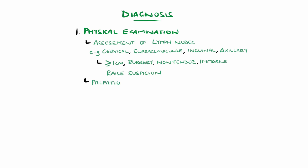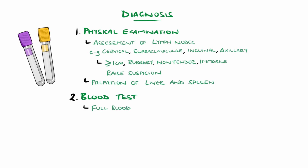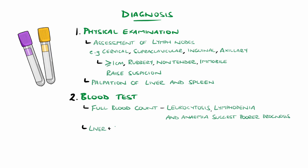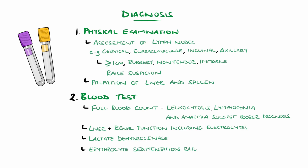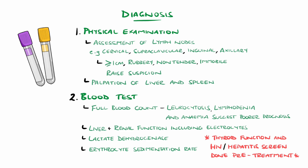There should also be palpation of the liver and spleen looking for enlargement. Blood tests include a full blood count — a marked leukocytosis, lymphopenia, or anaemia would indicate a poorer prognosis. Other bloods include a metabolic panel covering liver and kidney function, electrolytes, lactate dehydrogenase, and erythrocyte sedimentation rate. Prior to beginning treatment, thyroid function and screening for viruses like HIV and hepatitis should also be done.